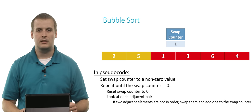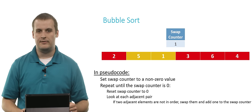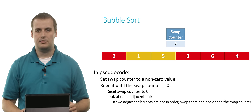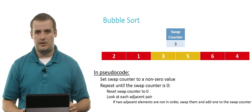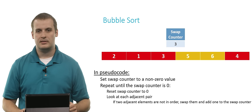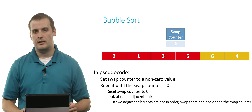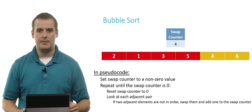Now we repeat the process. We look at the next adjacent pair, five and one. They're also out of order, so we swap them and add one to the swap counter. Then we look at five and three — they are out of order, so we swap them and add one to the swap counter. Then we look at five and six — they're in order, so we don't need to swap anything. Then we look at six and four — they are also out of order, so we swap them and add one to the swap counter.